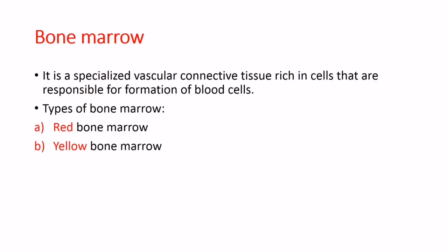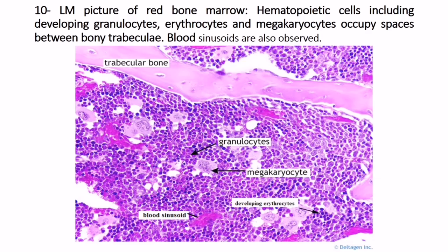Bone marrow is a specialized vascular connective tissue rich in cells responsible for the formation of blood cells. There are two types: red bone marrow and yellow bone marrow. In a light microscopic picture of red bone marrow, hematopoietic cells including developing granulocytes, erythrocytes, and megakaryocytes occupy spaces between bony trabeculae. Blood sinusoids are also observed between cells.